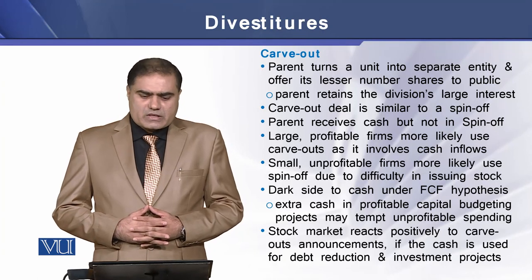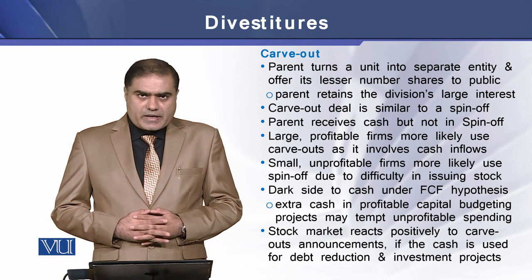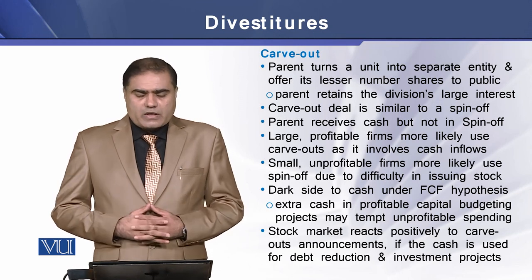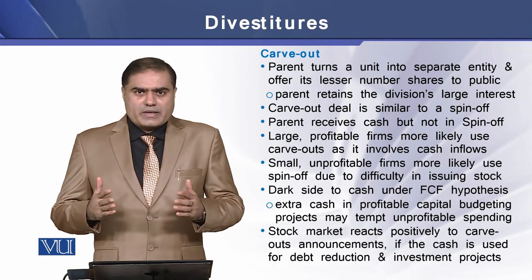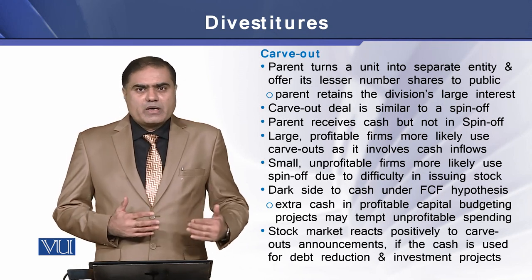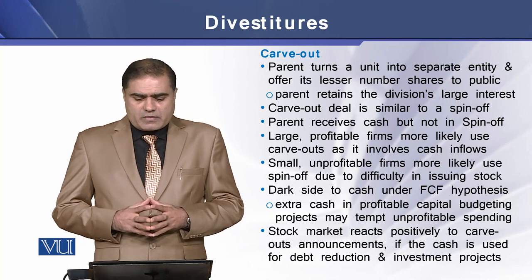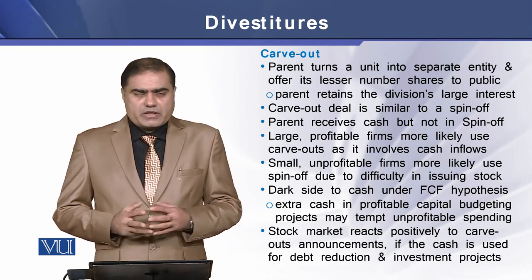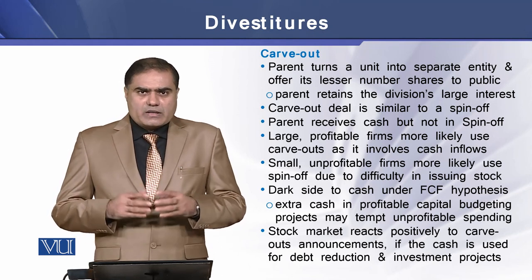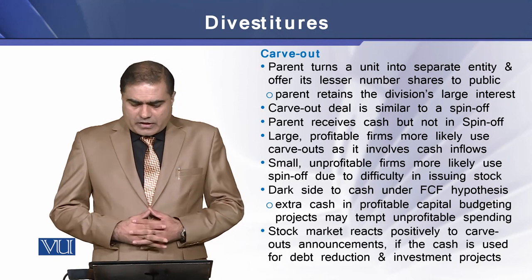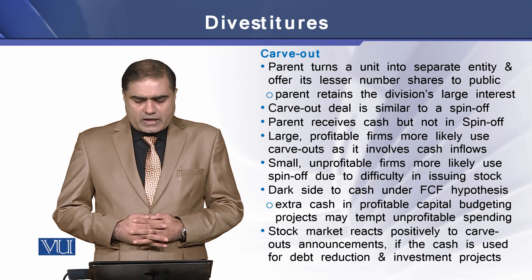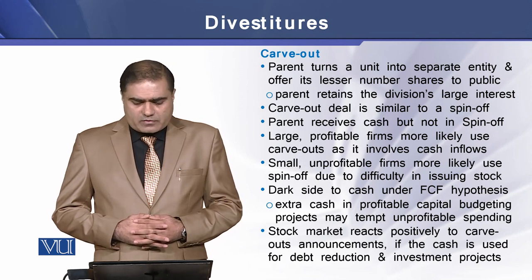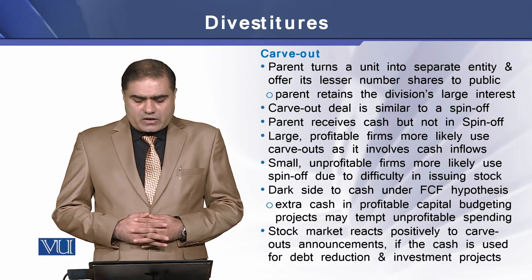The third form of divestiture is the carve-out plan, where the parent company turns a unit into a separate entity and offers a lesser amount of shares to the general public, while the parent company retains a larger amount of shareholding. A carve-out deal is similar to a spin-off, with the difference that the parent receives cash in a carve-out plan, but not in a spin-off. Large profitable firms are more likely to use carve-out plans as it involves cash, whereas small unprofitable firms are more likely to use spin-offs due to the difficulty of issuing stock.